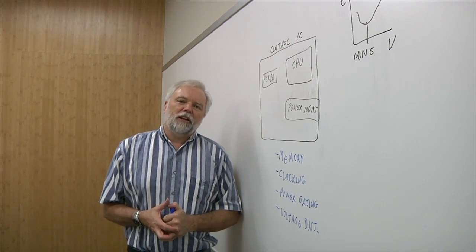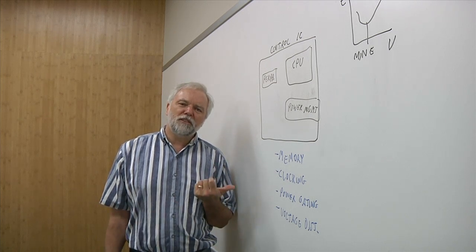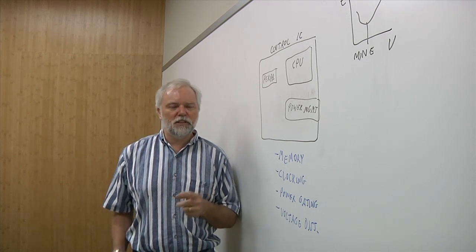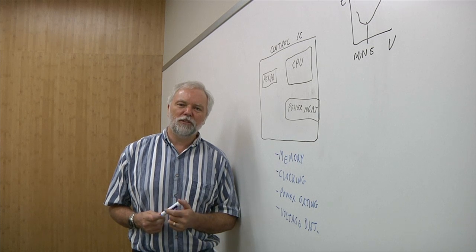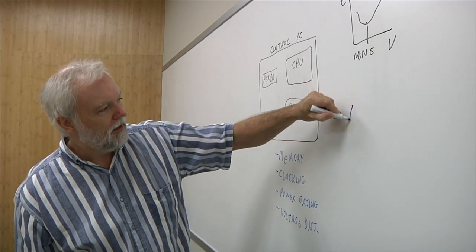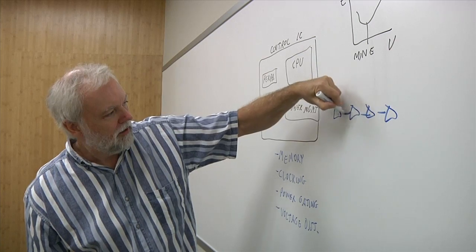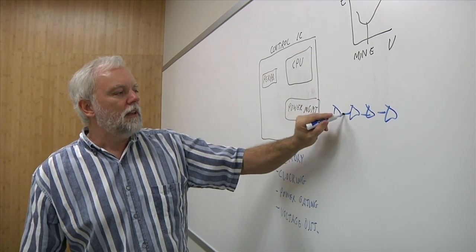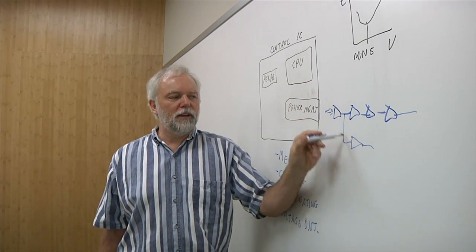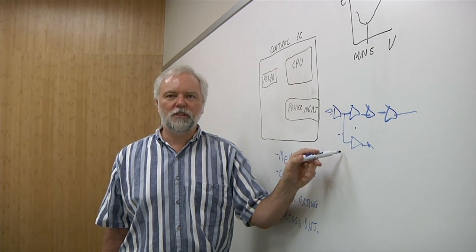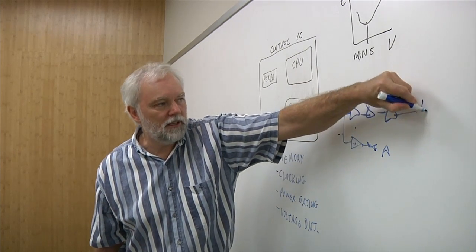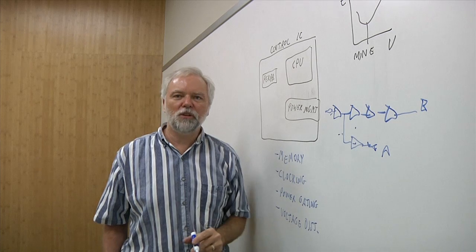The next thing to think about is clocking. And the reason that you need to think about it is when you lower the voltage on anything, the delay increases, as we've seen earlier, but the variability of the delay increases more. So if you look at a little clock tree here, if we have a clock tree, in a nominal voltage clock tree, this branch here may just be due to RC delays and the device sizing. We can have these two points here, A and B, as being roughly the same delay to get to them.